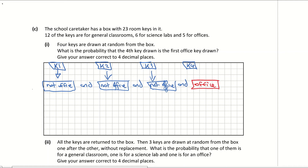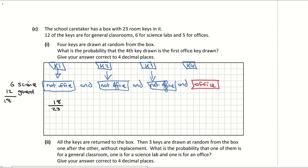Looking at these as fractions: the probability for key 1 not being an office key — that would be 6 from science and 12 from the general classroom, so 18 keys out of 23 total. I'm going to assume the keys are not being replaced. So for the second key, that 18 reduces to 17 because one non-office key has been removed, and I now only have 22 keys left in the box. The third key reduces to 16 out of 21.